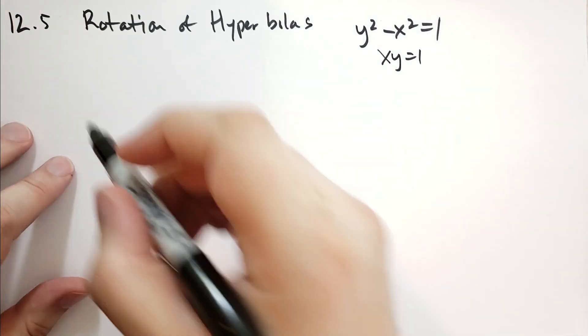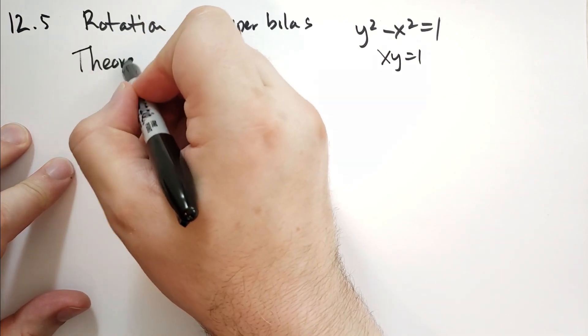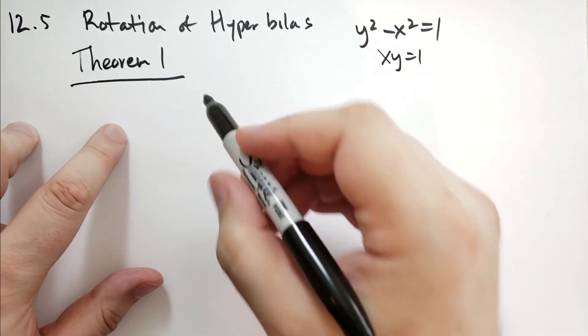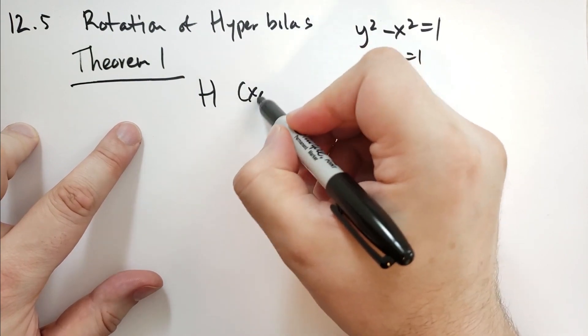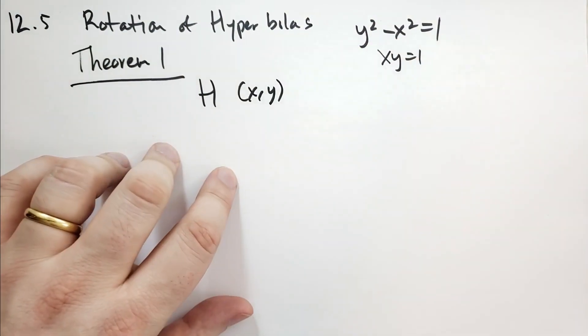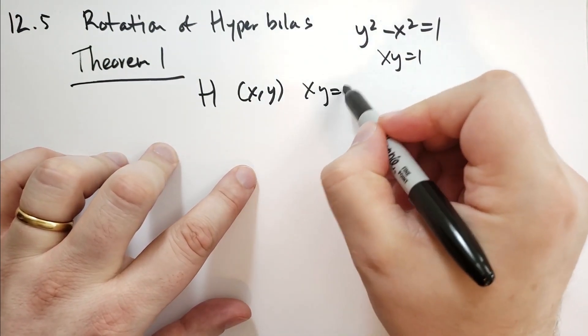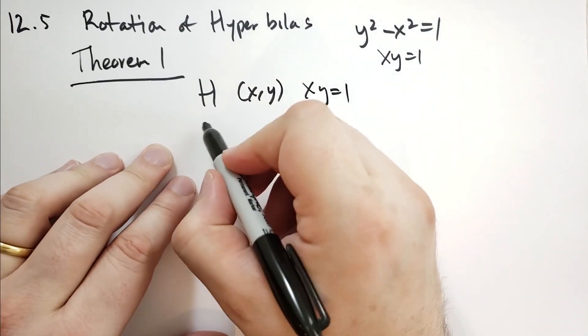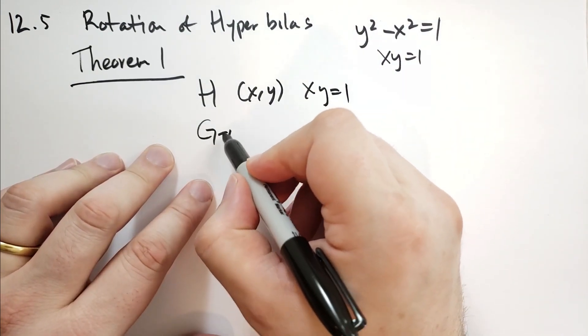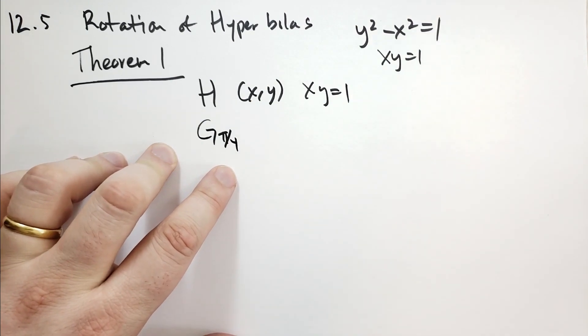Well, he has a theorem, theorem 1 of section 12. He says, let H be the set of points x, y, satisfying the equation xy equals 1. Let G be a rotation of pi over 4 degrees, counter clockwise, as usual.